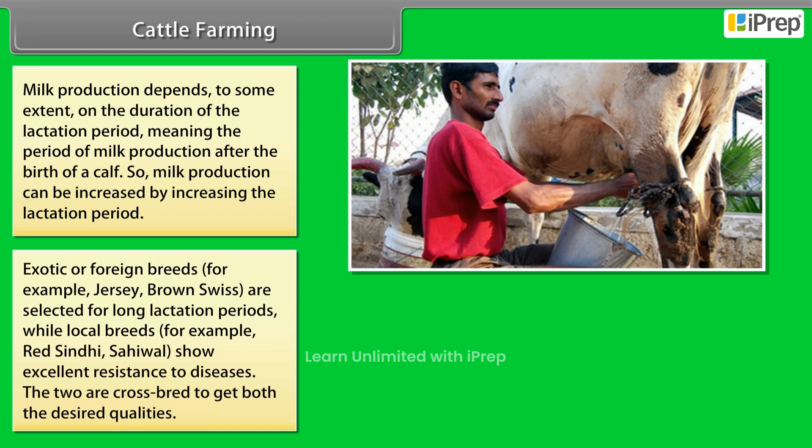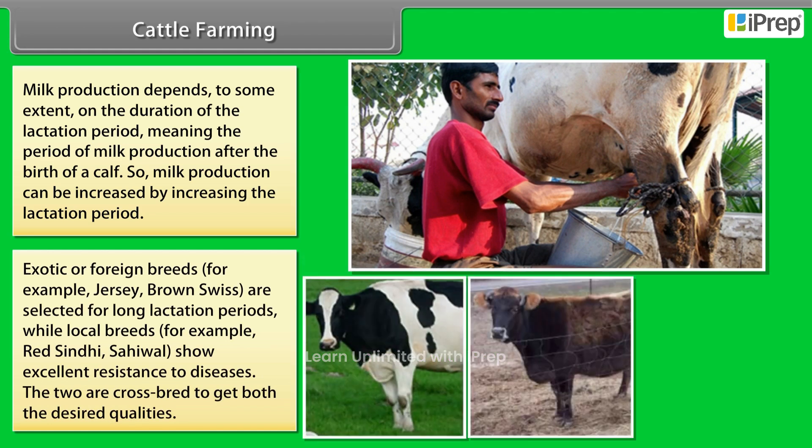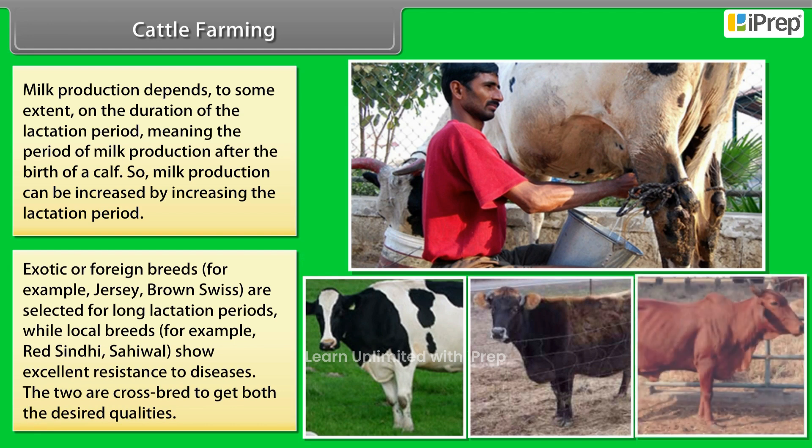Exotic or foreign breeds, for example Jersey and Brown Swiss, are selected for long lactation periods, while local breeds, for example Red Sindhi and Sahiwal, show excellent resistance to diseases. The two are cross-bred to get both the desired qualities.